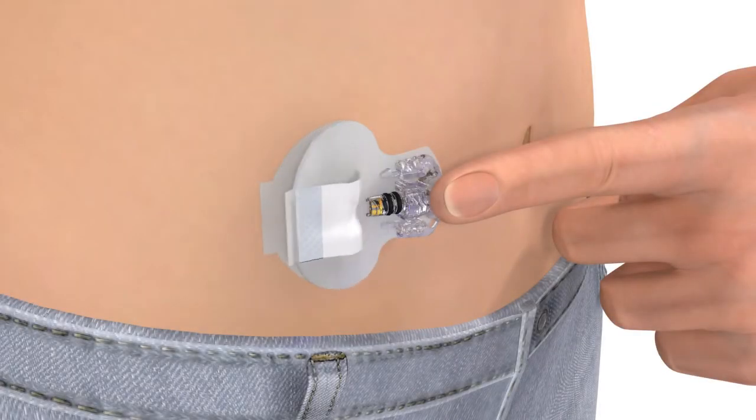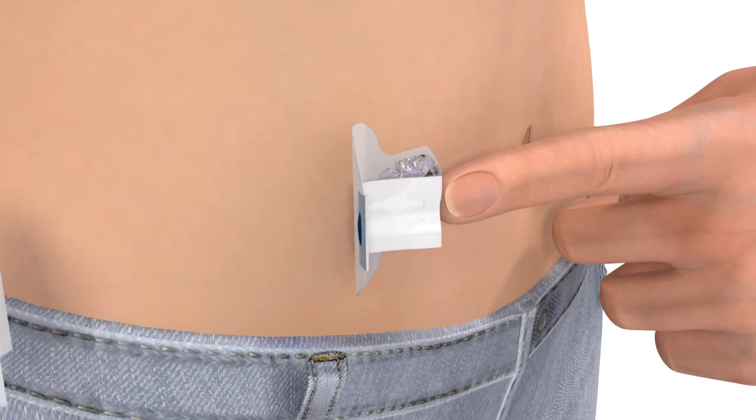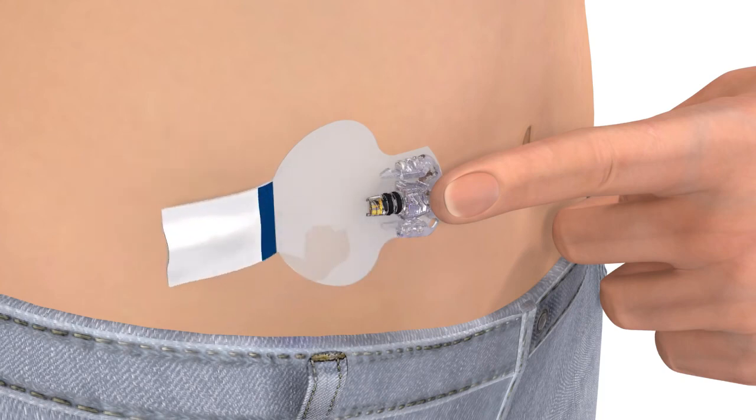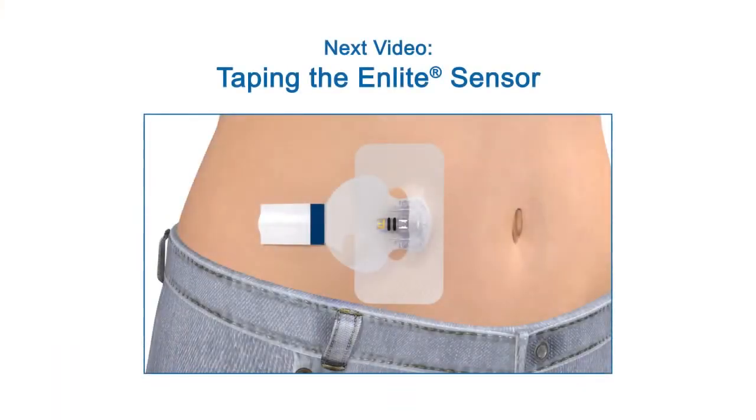Carefully remove the paper backing that is located underneath the curved adhesive pad. Press the adhesive against the skin. Now flip the adhesive tab so that it lies flat against the skin, but do not remove the paper backing just yet.